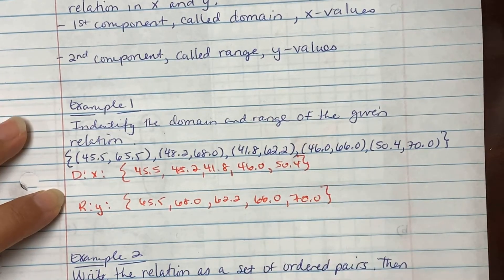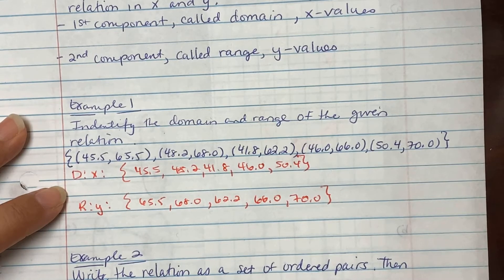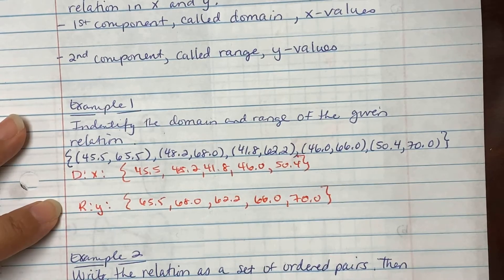Now when you're doing domain and range, you only list the value once. So if you have an x value that's repeated, you only list it once in the set. If you see a y value repeated, you only list it once in the set.